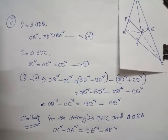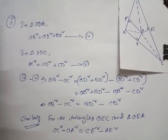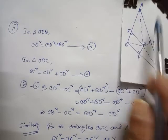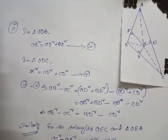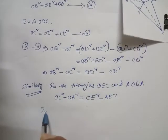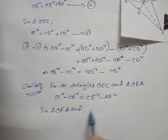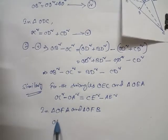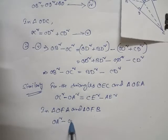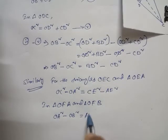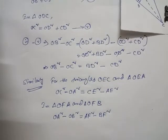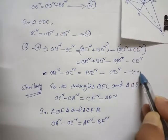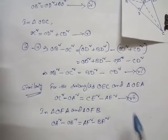For triangles OFA and OFB, similarly we can write: OA² − OB² = AF² − BF². This is equation number 8. So now we have equation number 6: OB² − OC² = BD² − CD²; equation number 7: OC² − OA² = CE² − AE²; and equation number 8: OA² − OB² = AF² − BF².